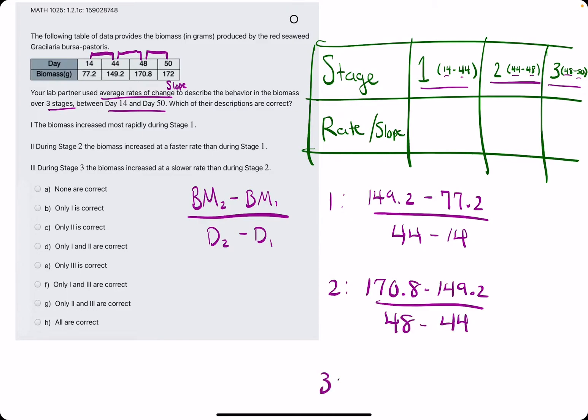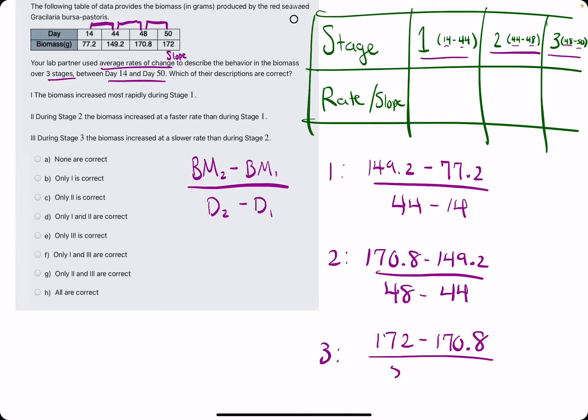And we're almost done here. It's kind of tedious, but it's not very complicated. So hopefully that's good. 172 minus 170.8, all divided by 50 minus 48.